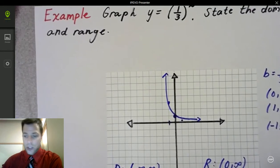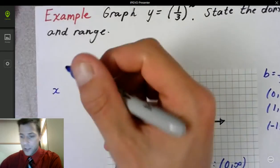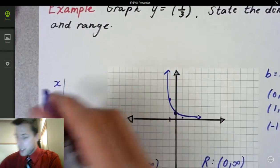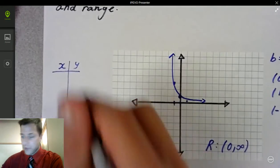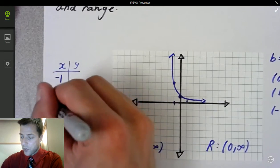We got our domain and range there. And you can also use a table of values. Always, no matter what you graph in pre-cal here, we can use a table of values. You could have used negative 1, 0, 1.